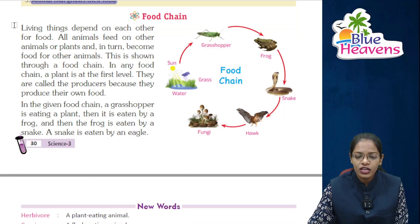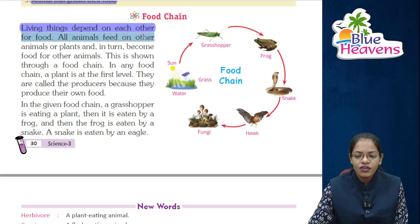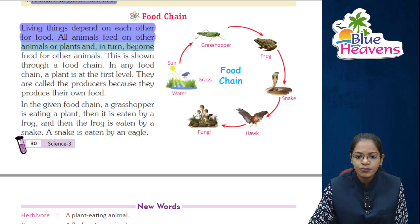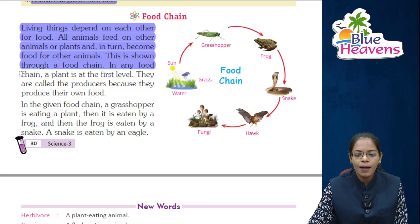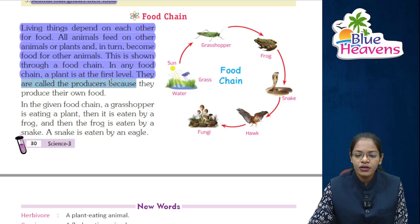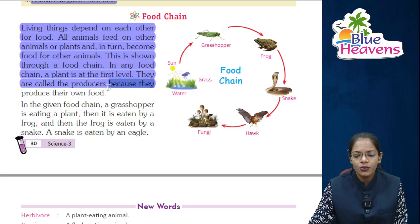Next is the food chain. Living things depend on each other for food. All animals feed on other animals or plants, and in turn become food for other animals. This is shown through a food chain. In any food chain, a plant is at the first level — they are called the producers, because they produce their own food.